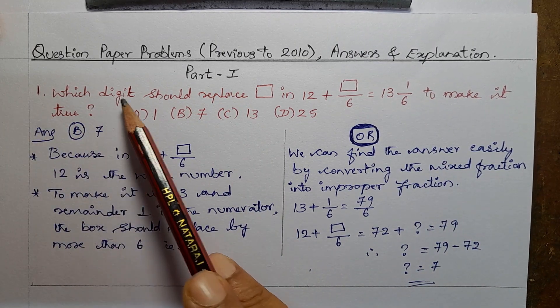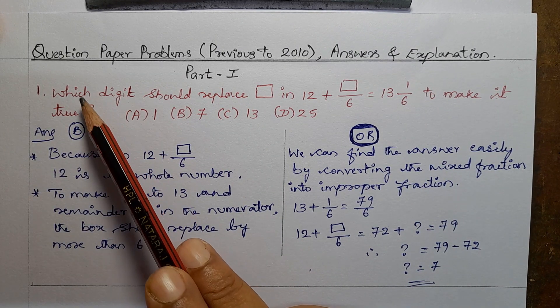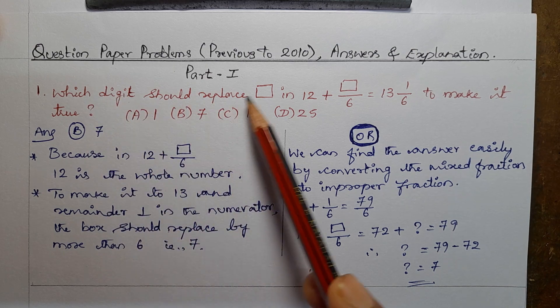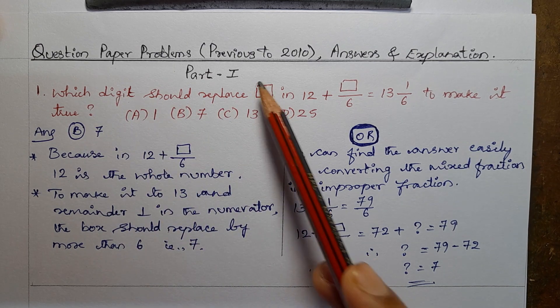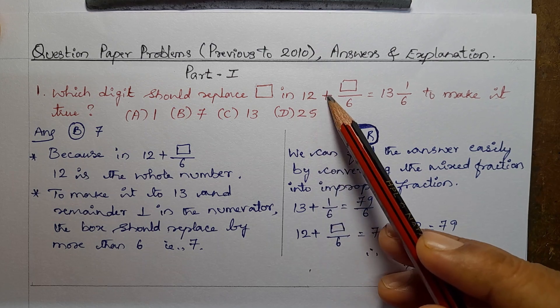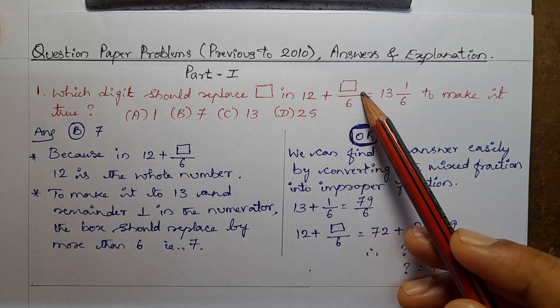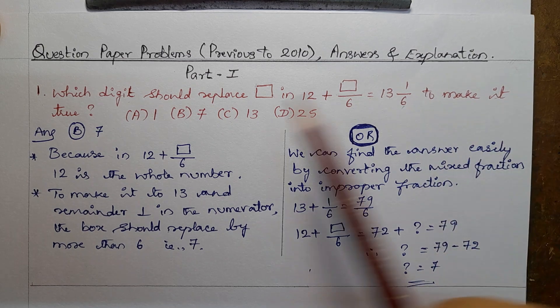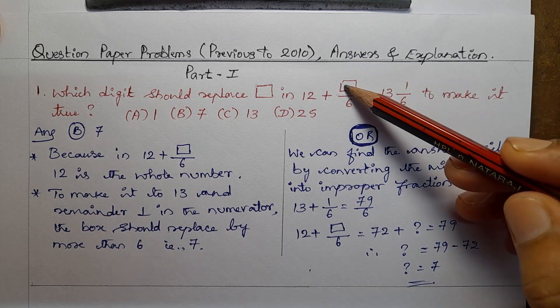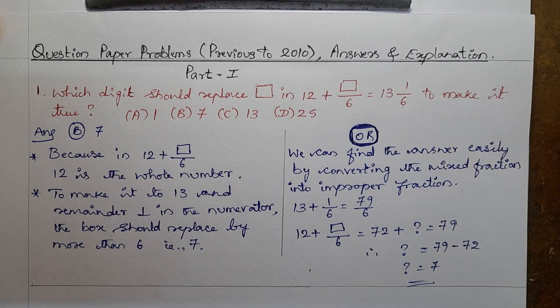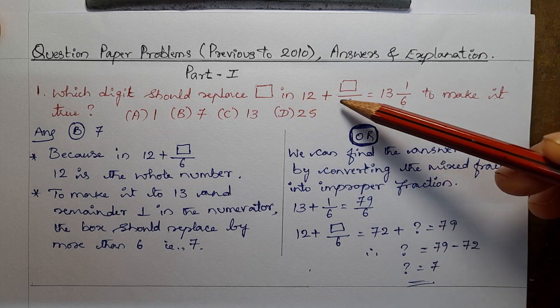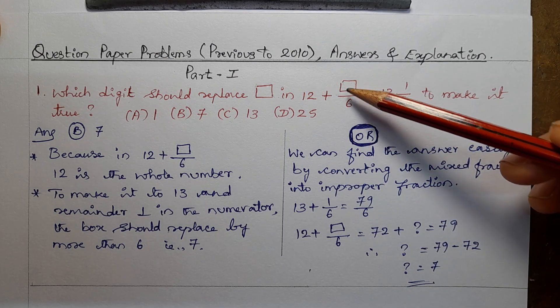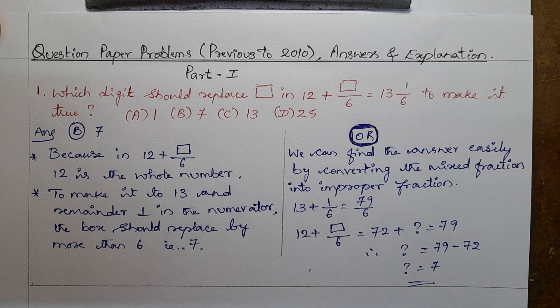First question: which digit should replace the box in 12 plus box divided by 6 equals 13 and 1/6 to make it true? Which digit to replace in 12 plus this divided by 6 equal to 13 and 1/6 to make it true?